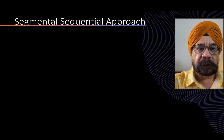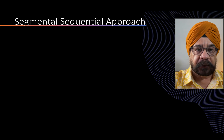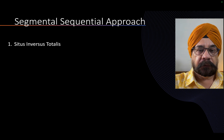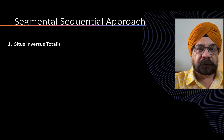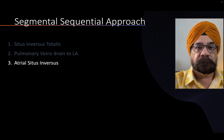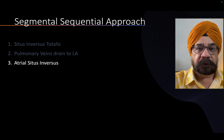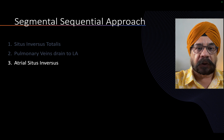According to the segmental sequential approach, this patient — this fetus — had the following findings. The fetus had situs inversus totalis. The pulmonary veins did drain into the left atrium, which was also on the right side. Normally it's on the left side, but because this is situs inversus totalis, the left atrium and all those structures were on the right side.